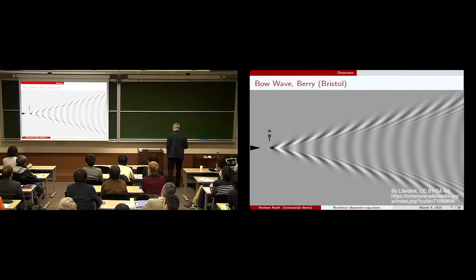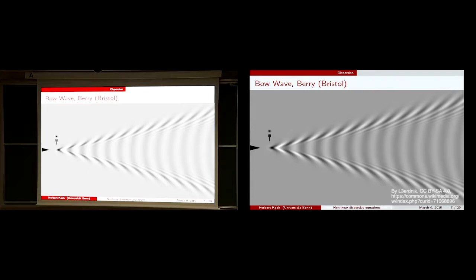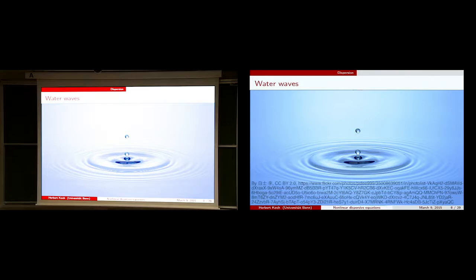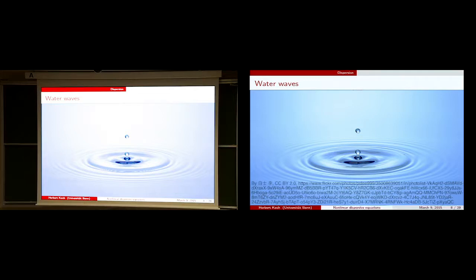That's an attempt by Berry and Bristol — I found it on the internet. From physics, they tried to find mathematical patterns in the sense of finding functions which describe the bow wave of a ship, and the coincidence is quite good. This is a function describing the wave pattern.